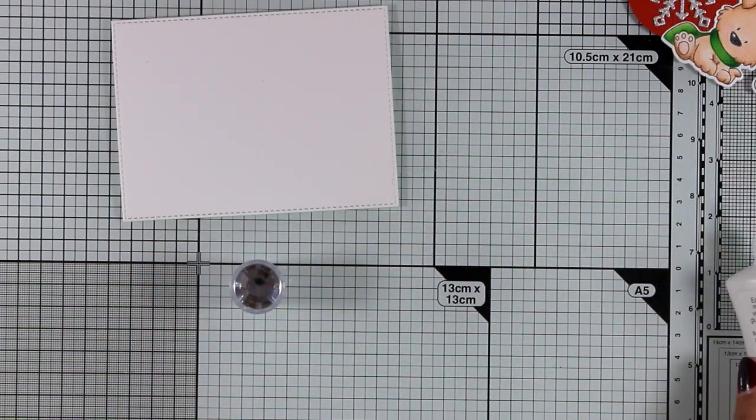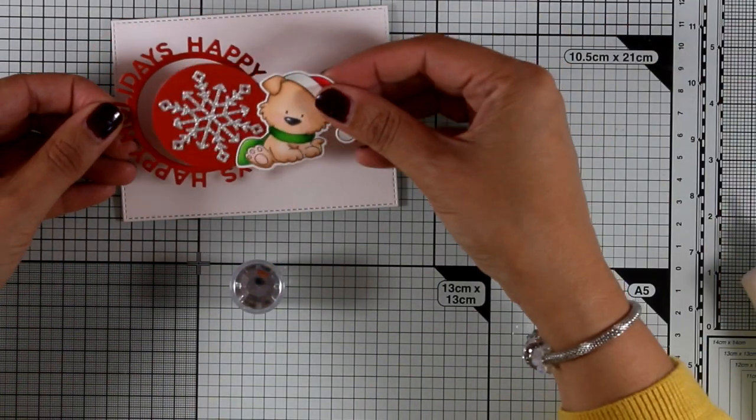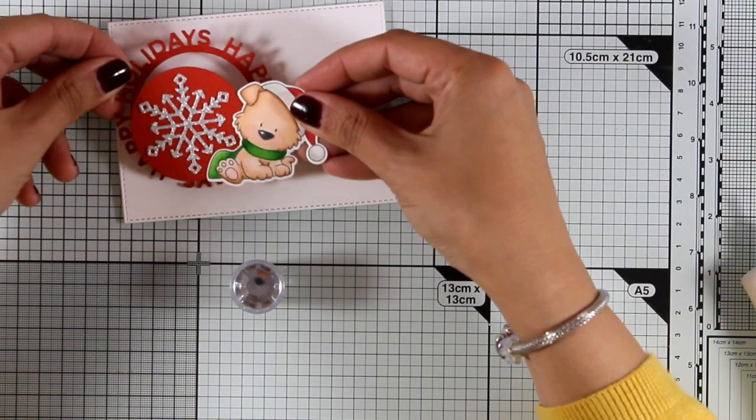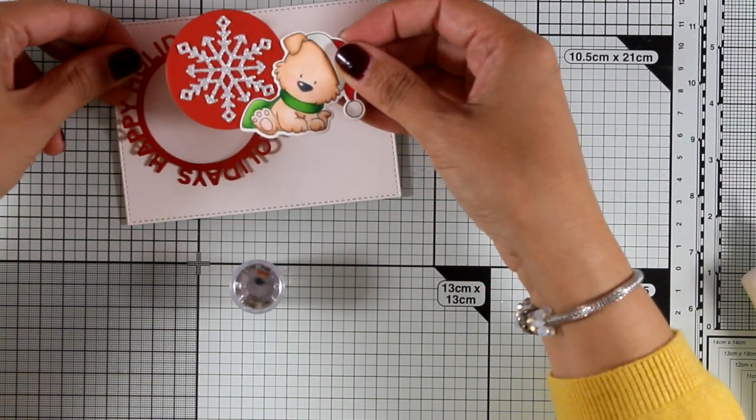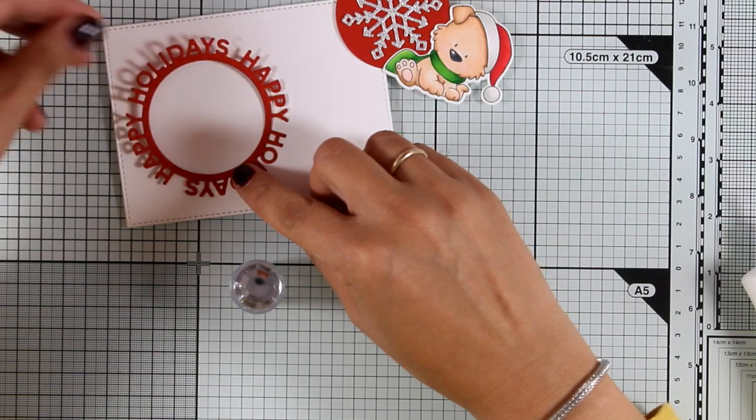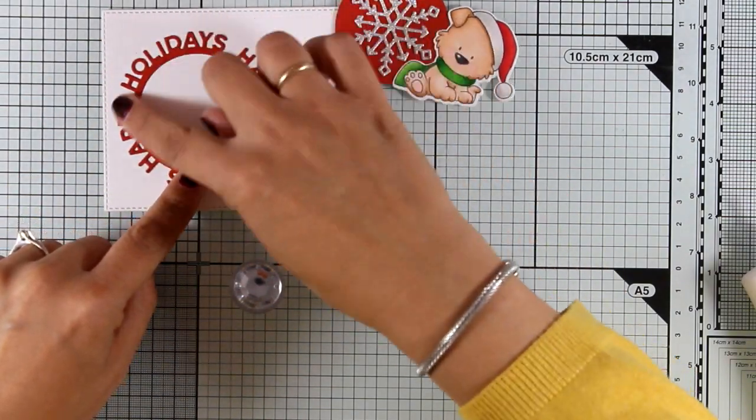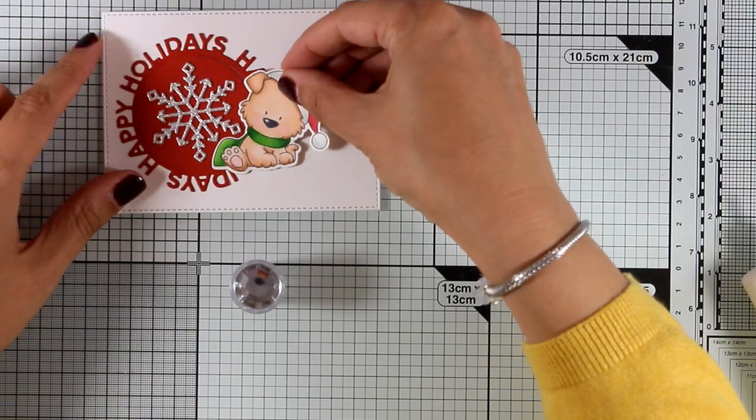So I'm adding some glue at the back of my sentiment there. I'm going to stick it on top of this white panel. And by the way, I have cut out this panel by using the stitched rectangle dies. So I do have a beautiful stitching around it that always gives a nice finishing touch.